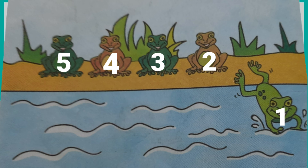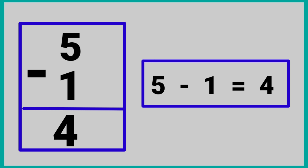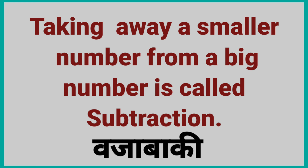In the second picture, five frogs were on a river bank. One frog jumped into the water. Count how many frogs are on the river bank now: one, two, three, four. That means five minus one is equal to four. Four frogs are on the river bank now. Taking away a smaller number from a big number is called subtraction.